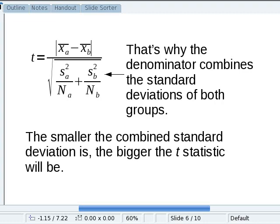And again, the smaller this combined standard deviation is, the bigger the t-statistic will be. The more consistent our results, the more likely it is that we'll be rejecting the null hypothesis.